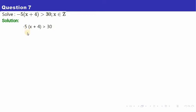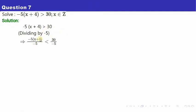We want to get rid of this minus five here. In order to get rid of minus five, you can divide both sides by minus five. If we do that, note that we are dividing by a negative number, so the inequality sign will change — it becomes less than in this case.